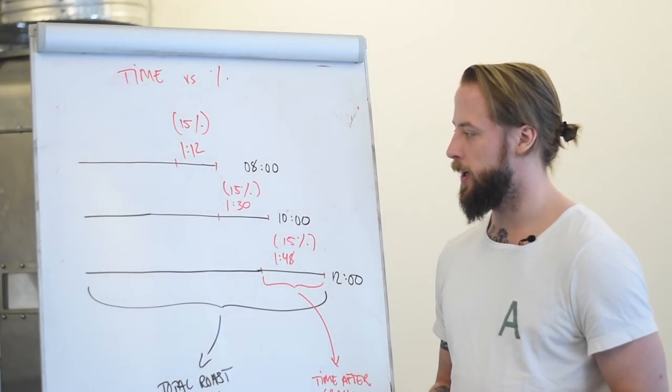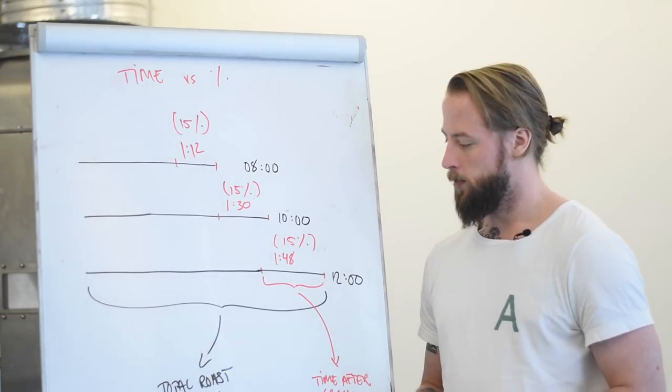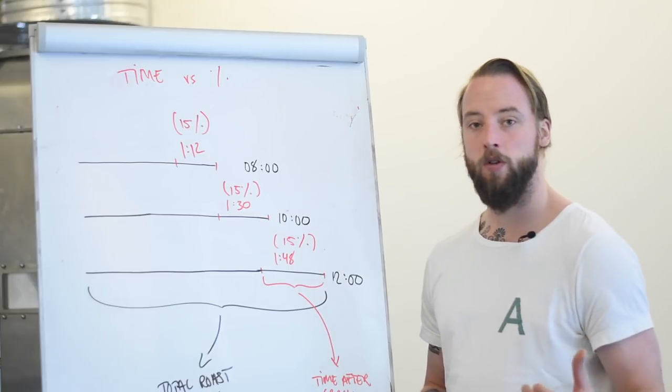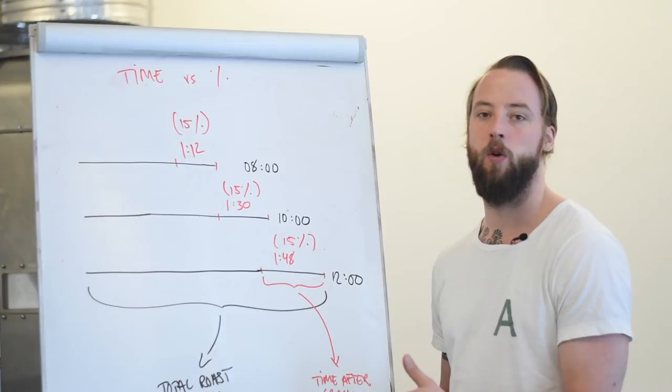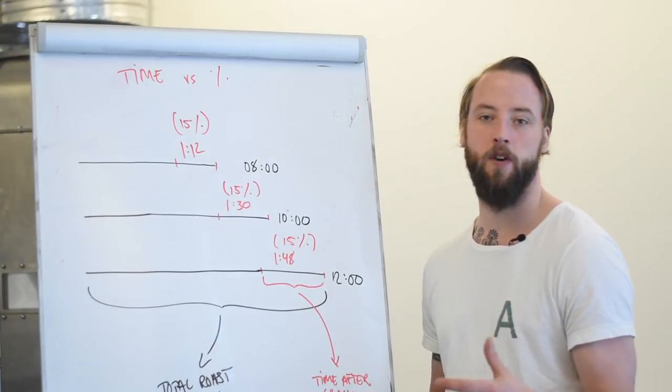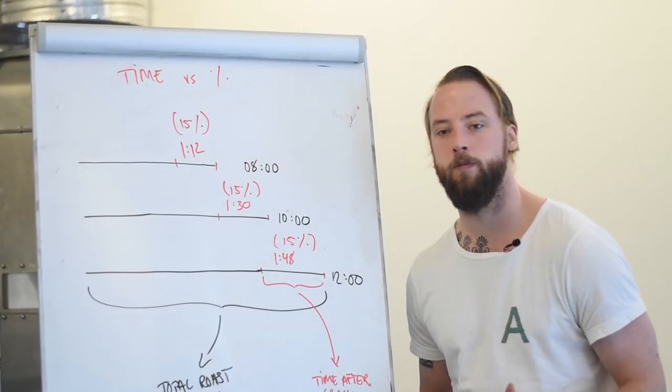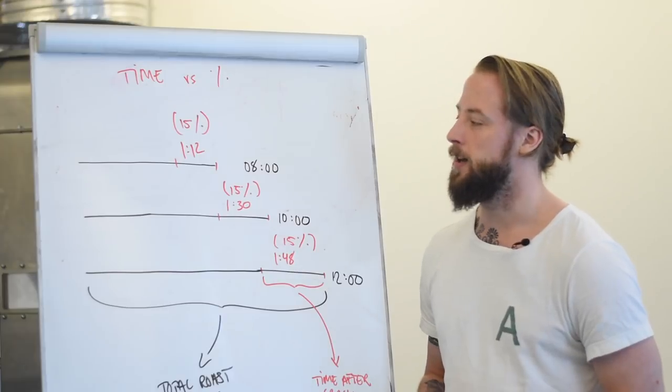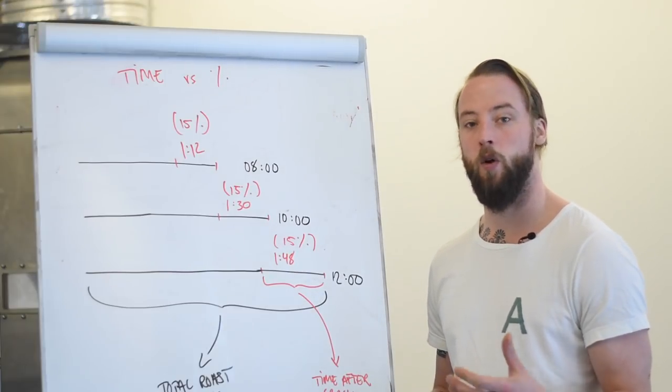I get a lot of questions on this whole development time ratio. What people are referring to is basically when you roast coffee, you go into crack, and the time after that crack until the end of the roast is what some people refer to as development time. Most people know what I think about using that term—use whatever term you want. I say time after crack because time after crack describes pretty accurately what it is.